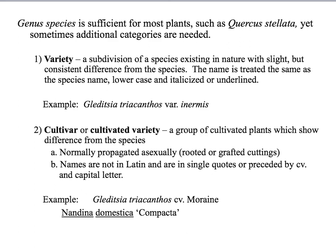A cultivated variety, or cultivar, is when commercial plant producers have taken a plant — either a naturally occurring variety or a mutant sport — and it's normally propagated asexually, by cuttings, so that the commercially produced cultivar can be very regular. The example is Gleditsia triacanthos cultivated variety 'Moraine'. Moraine is a thornless and male variety. You can put CV in front of the cultivar name or put it in single quotes. You'll most likely see it in single quotes in industry and as CV in educational or botanical texts.